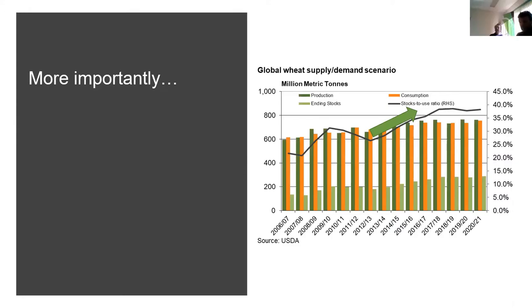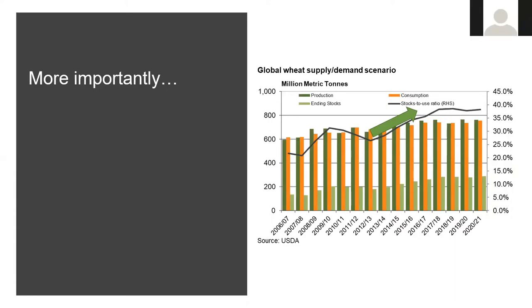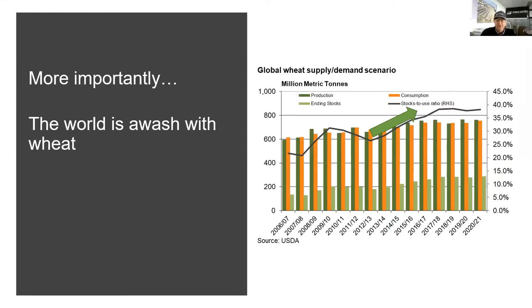The black line shows how the stock-to-use ratio has grown — it's up between 35 and 40%, giving buyers a lot of confidence that there's plenty of grain in the world. Apart from Australia, most other grain-producing countries have had pretty good seasons. While we've had a couple of droughts, the world has actually been producing more wheat, and the world is pretty much awash with wheat.